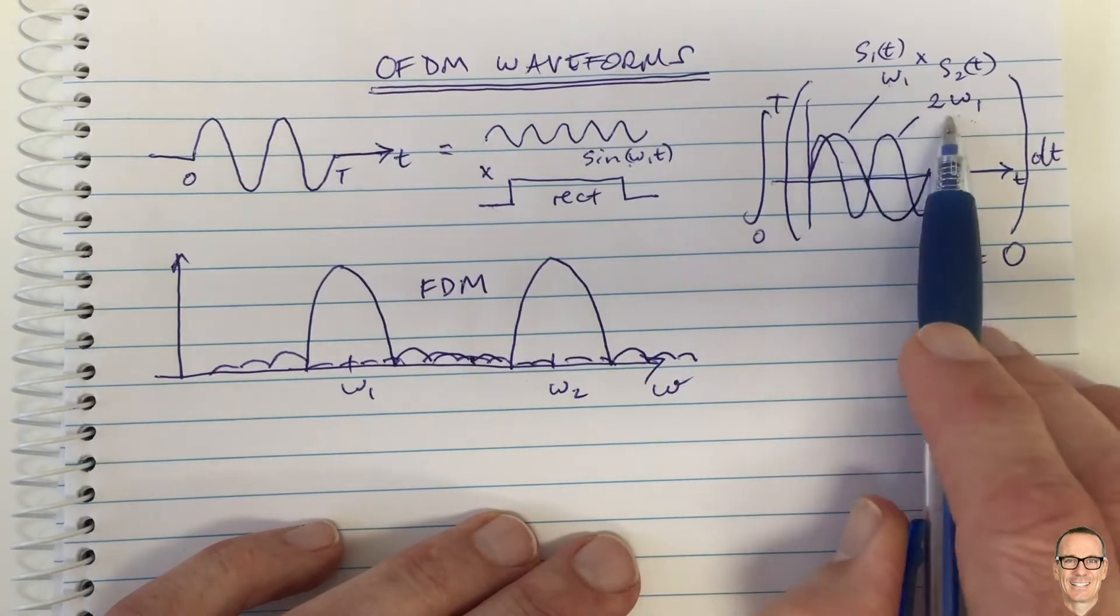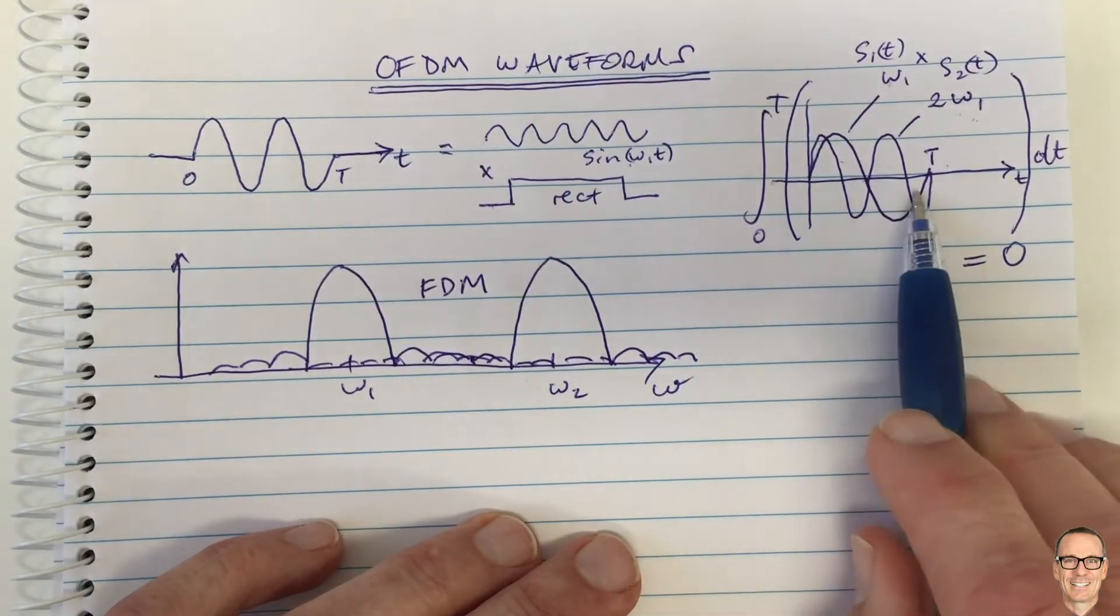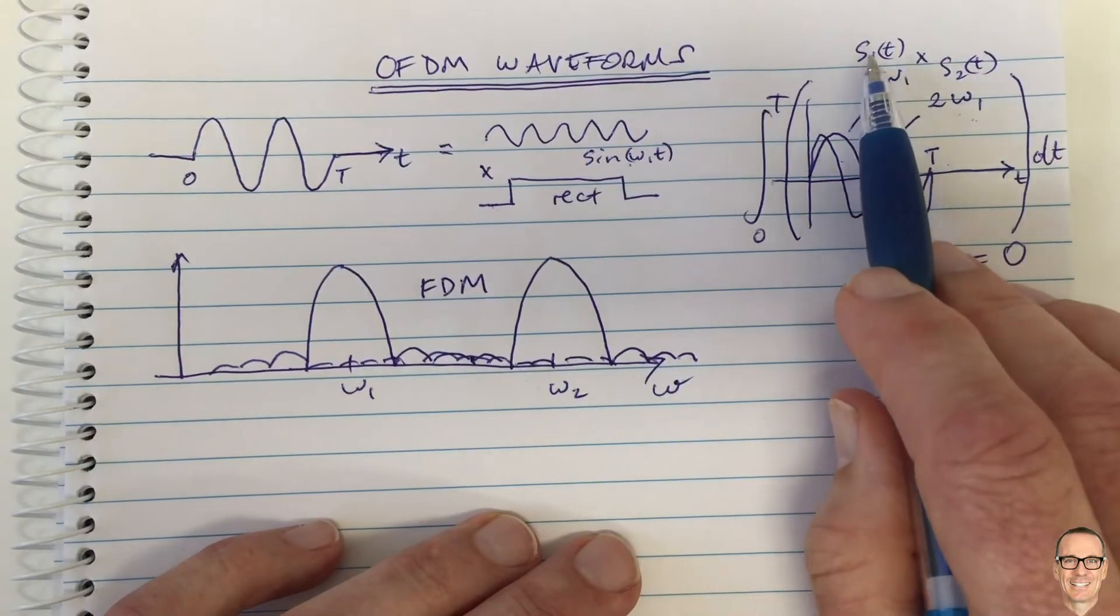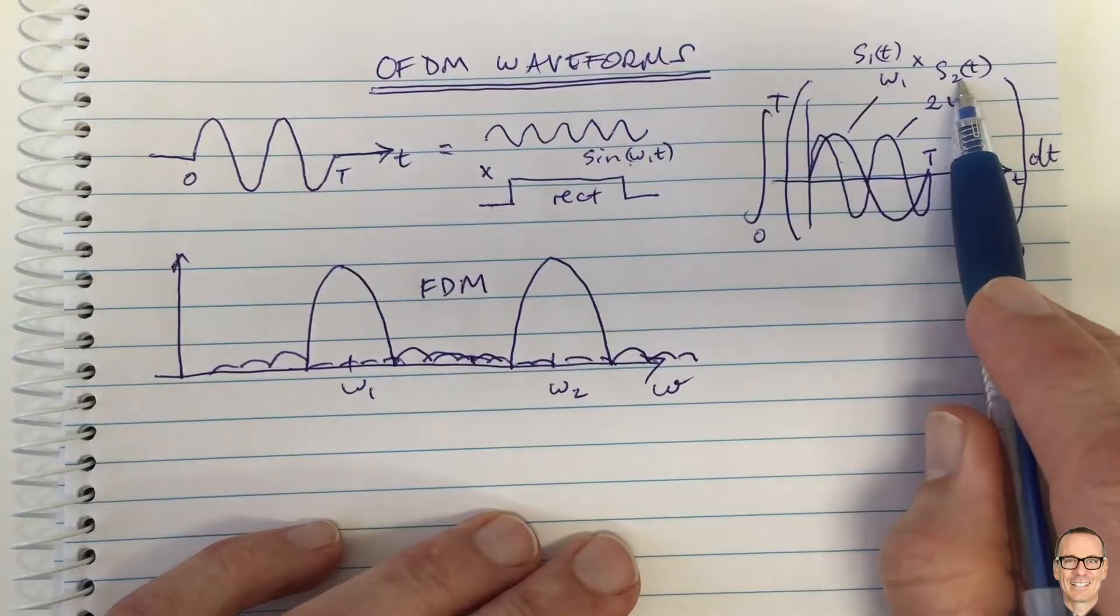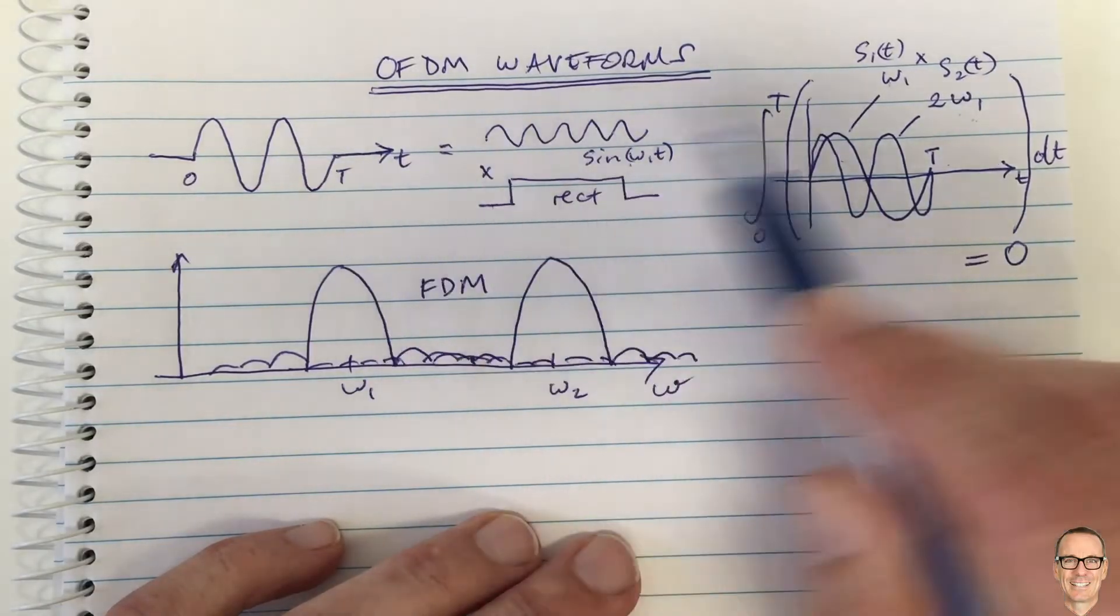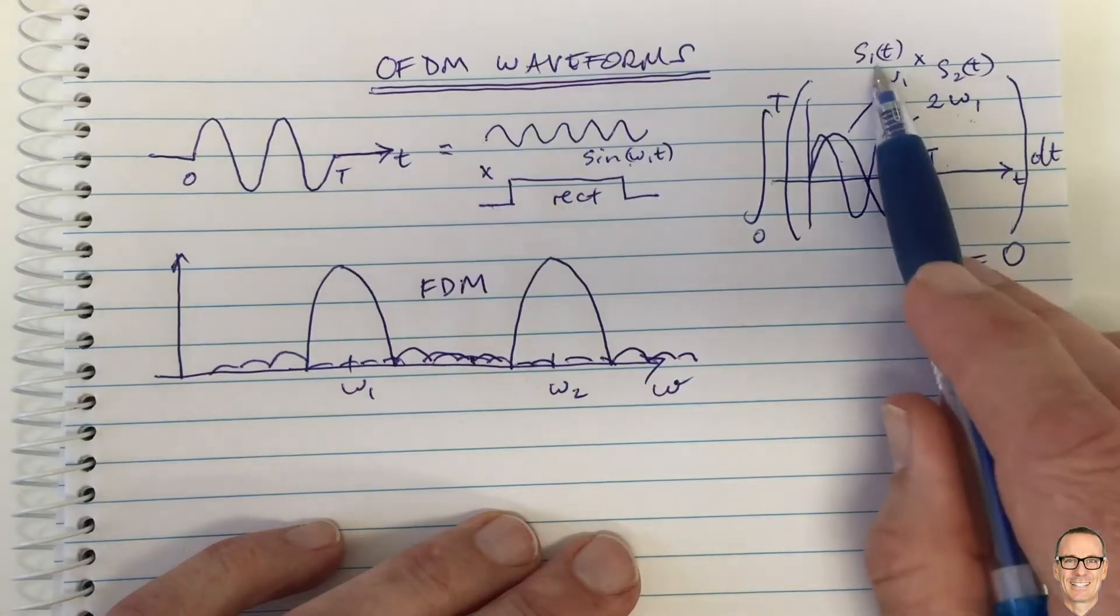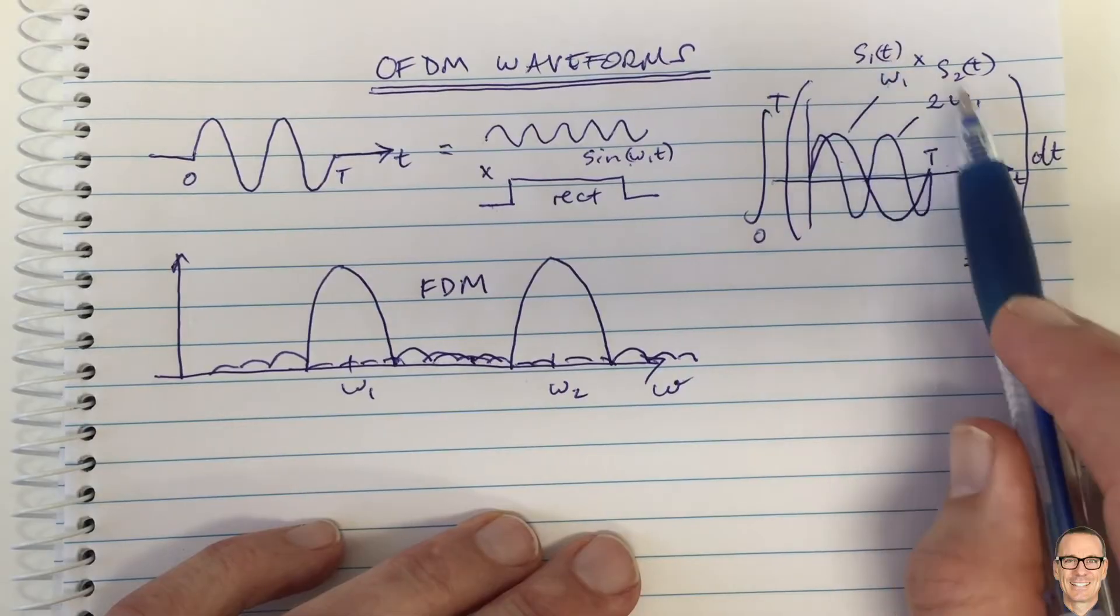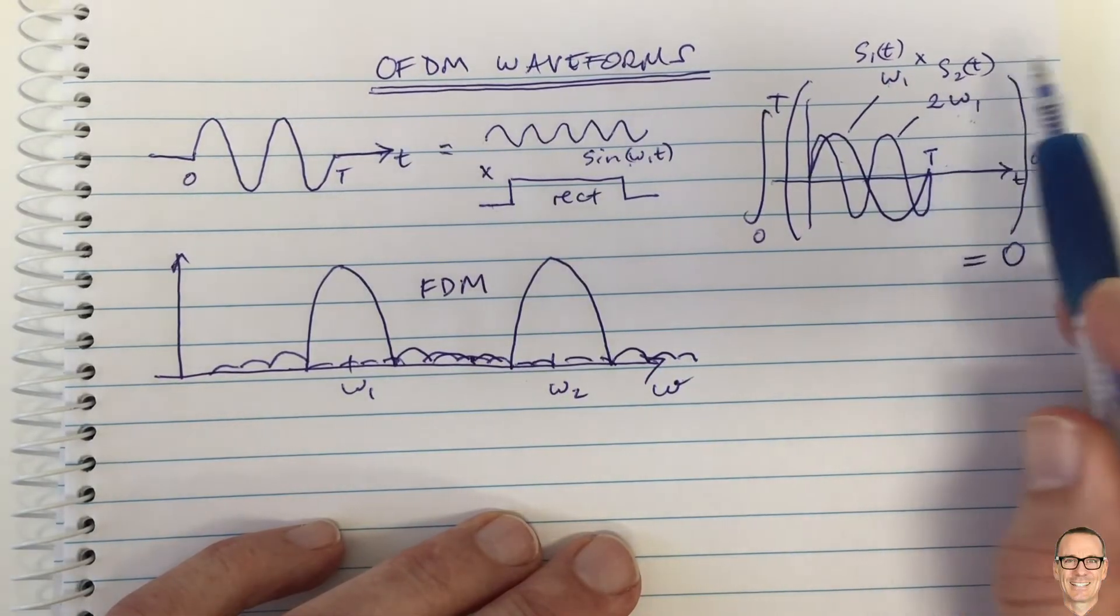And it turns out if we choose any integer multiple over that period capital T, then they will be orthogonal and therefore you can send data on S1 by multiplying it by plus or minus 1, and you can send data on S2 by multiplying it by plus or minus 1, and they won't interfere because at the receiver the filter for S1 is going to pick out S1 and it's going to have zero effect from S2 and vice versa.